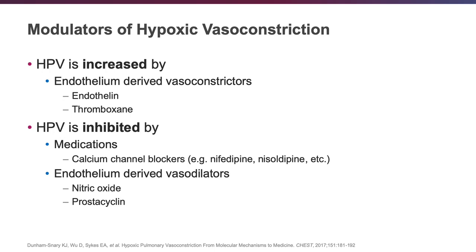There are other modulators of hypoxic vasoconstriction. HPV is increased by endothelium-derived vasoconstrictors, including endothelin and thromboxane, and it's inhibited by endothelium-derived vasodilators like nitric oxide and prostacyclin. Medications can also inhibit HPV and cause vasodilation, and that's classic for calcium channel blockers.